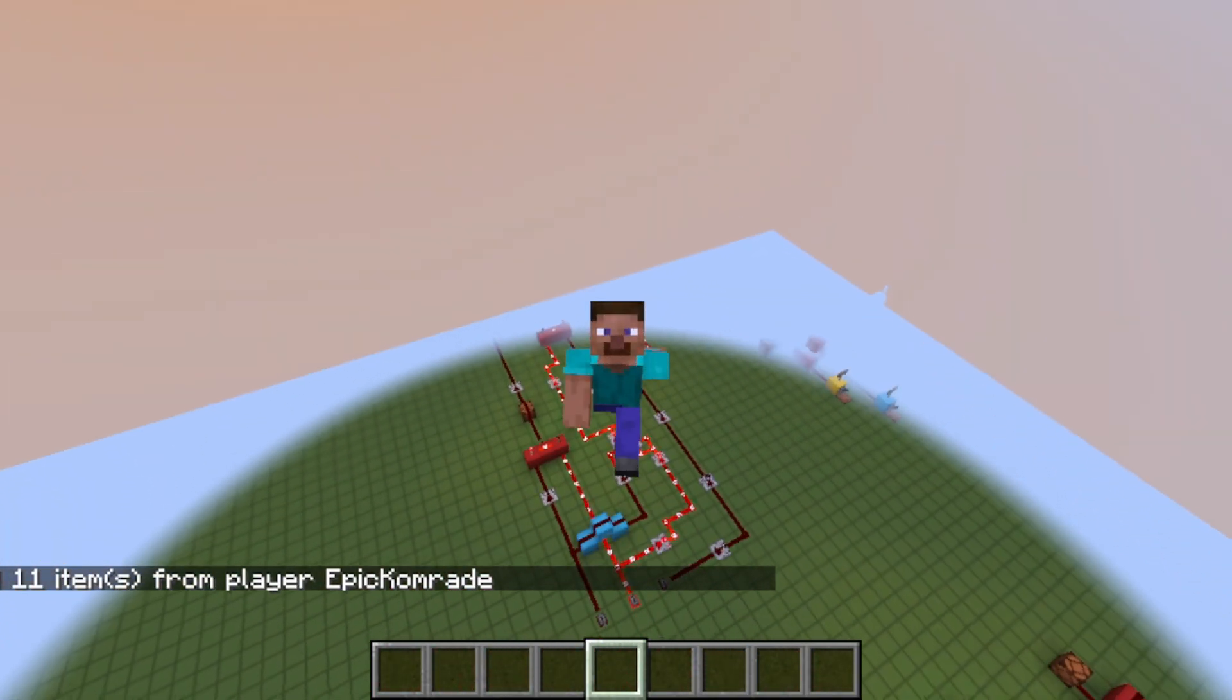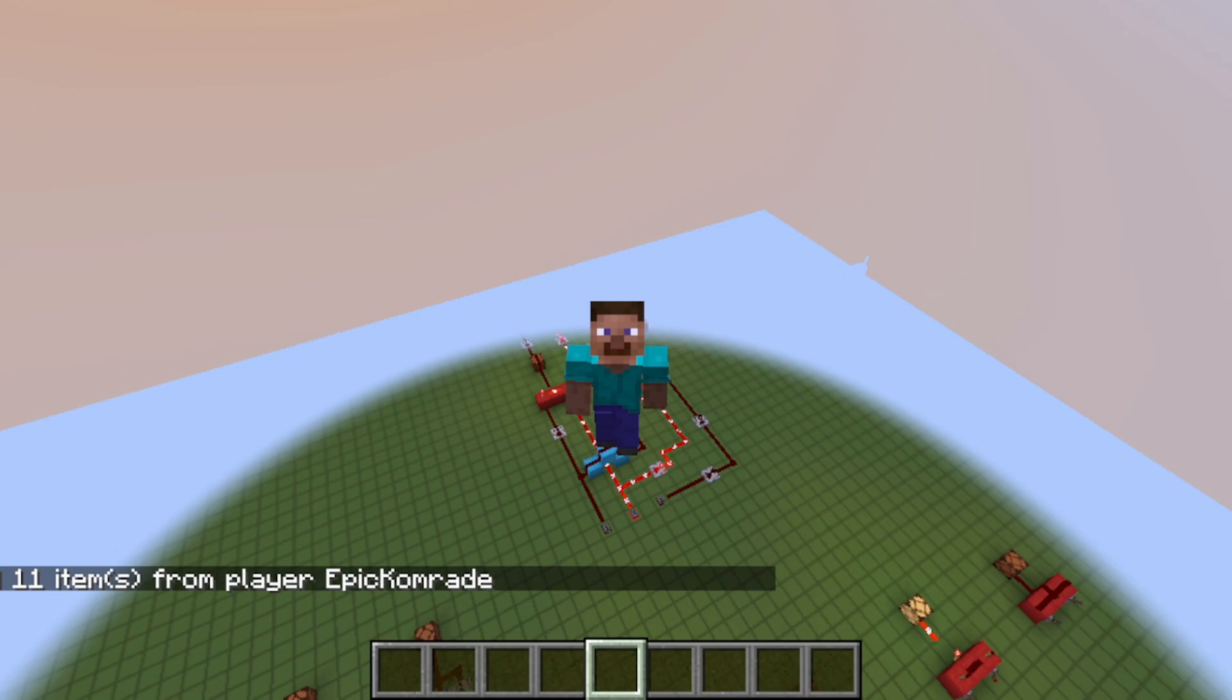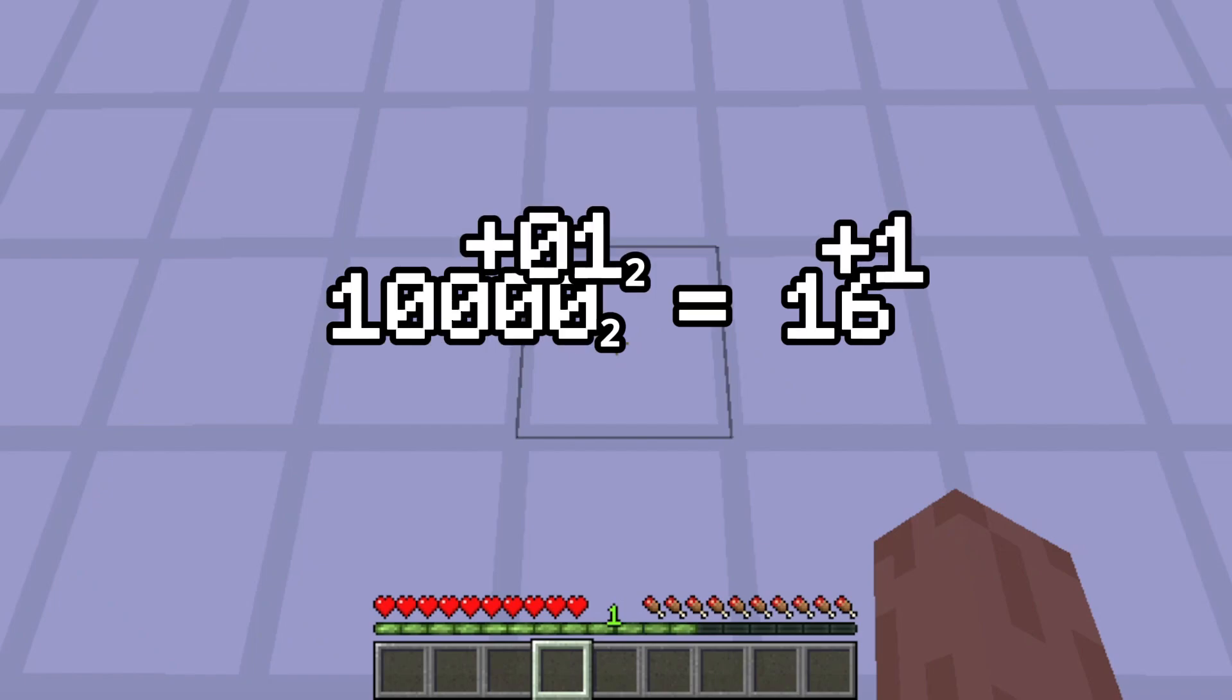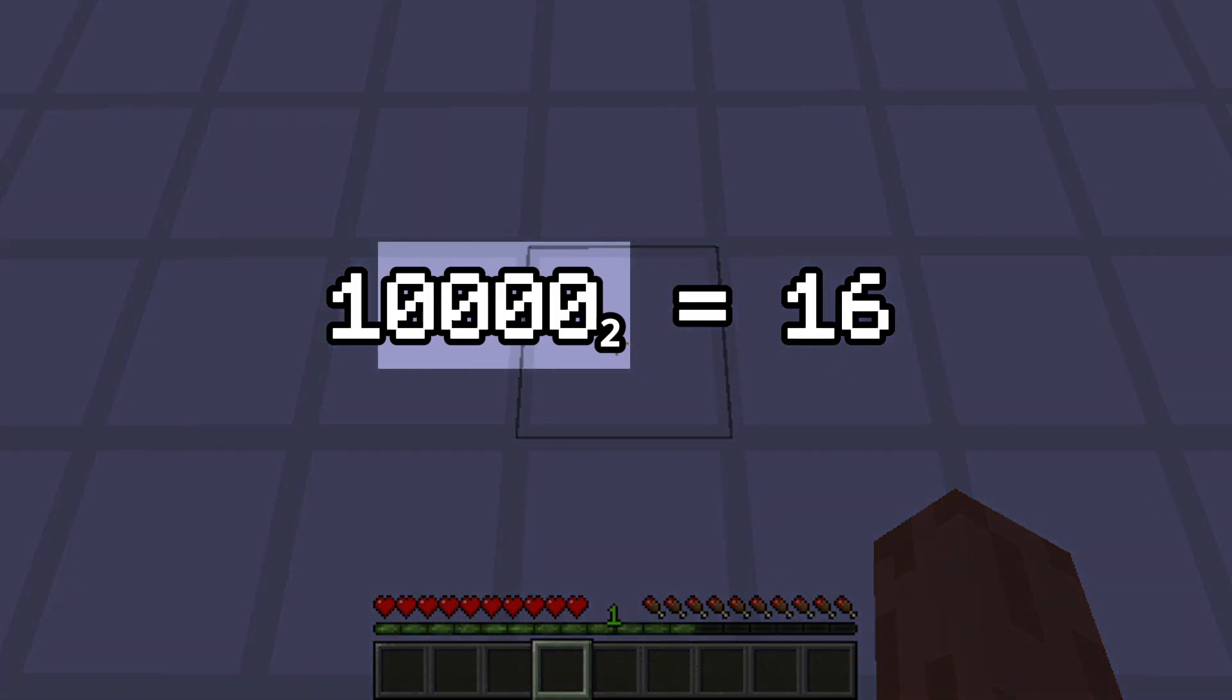Anyways, what about subtraction? Well, since we're using 4 bits, our maximum number would just be 1111, or 15. If we add one more, well, then we overflow, and it results in 0 since we're only using 4 bits. We've essentially wrapped around back to 0. This is a crucial concept in modular arithmetic.